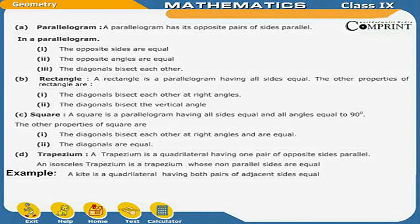A kite is a quadrilateral having both pairs of adjacent sides equal.